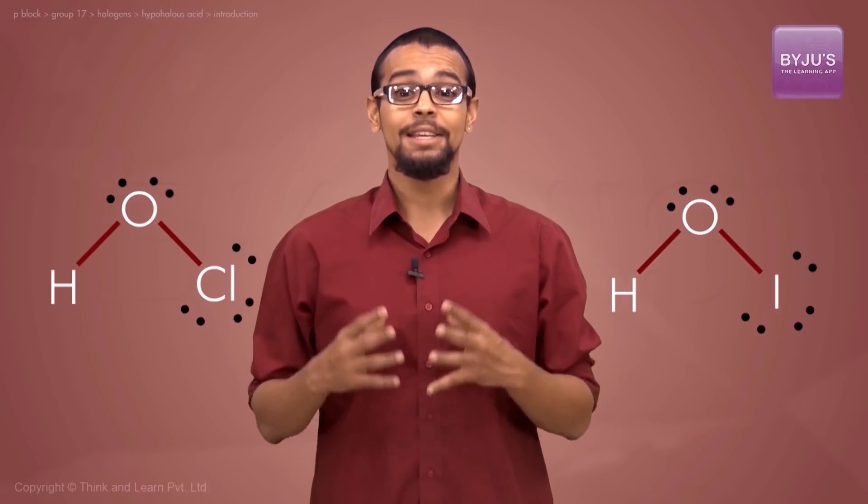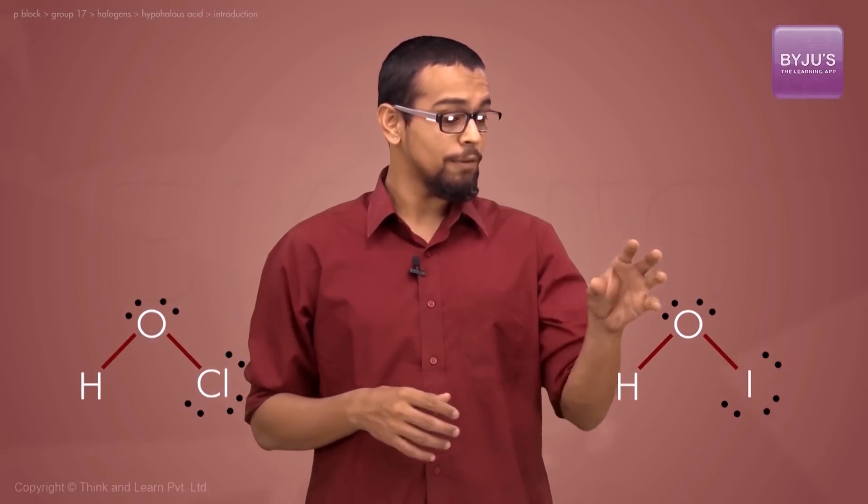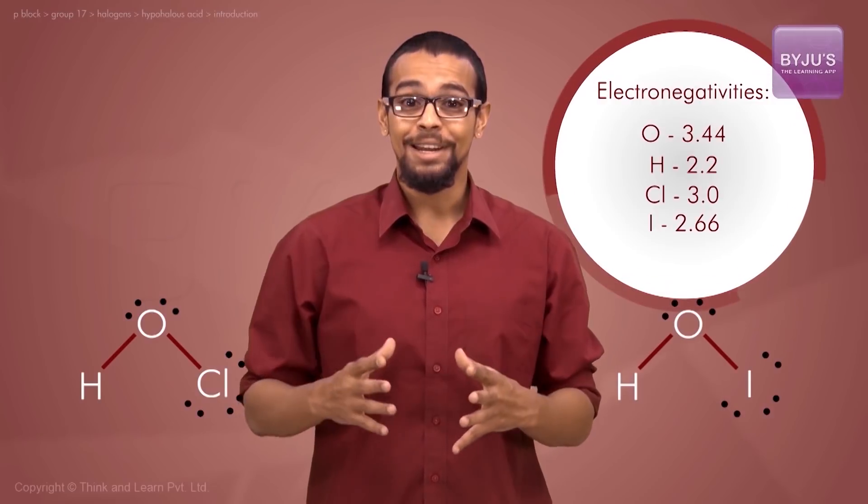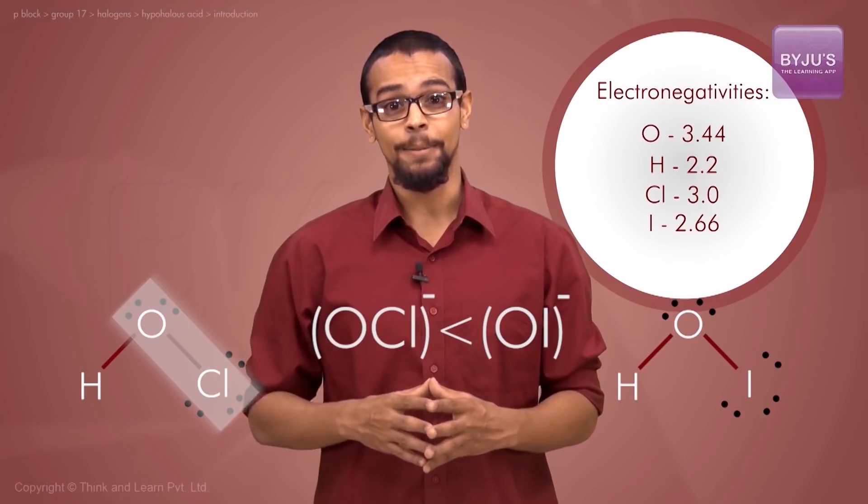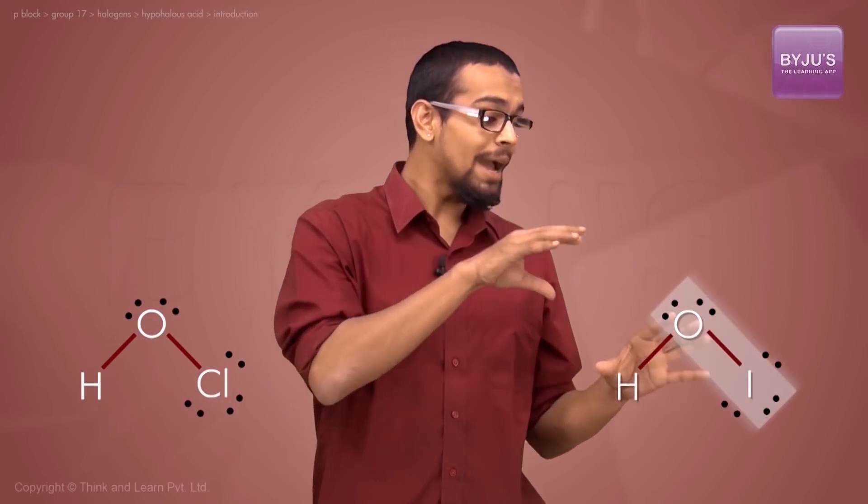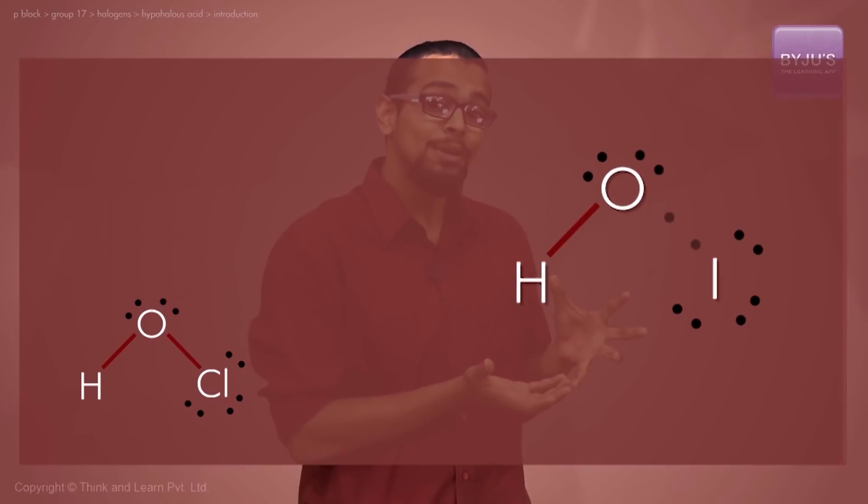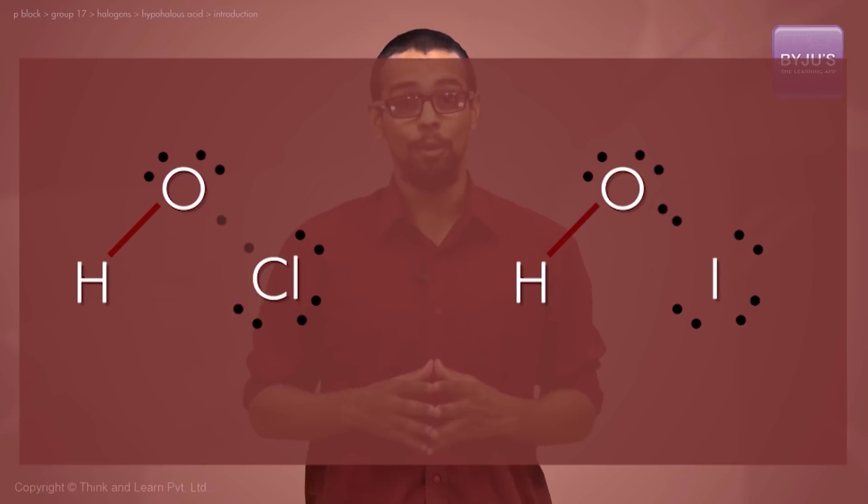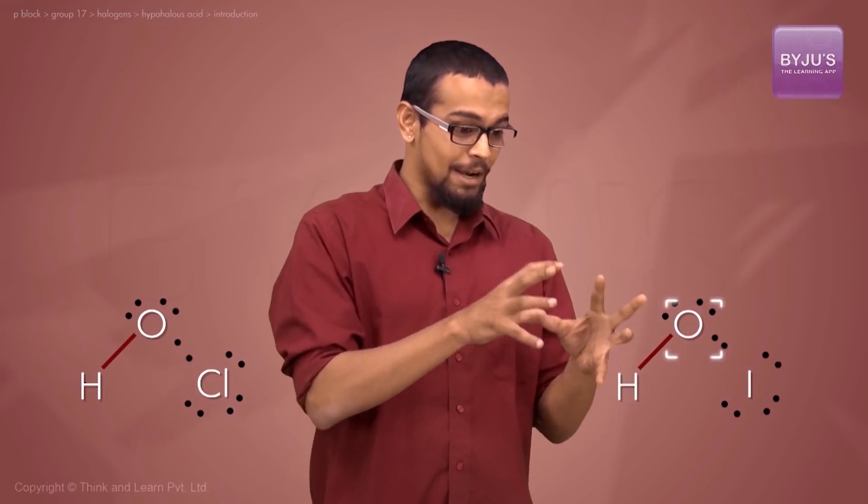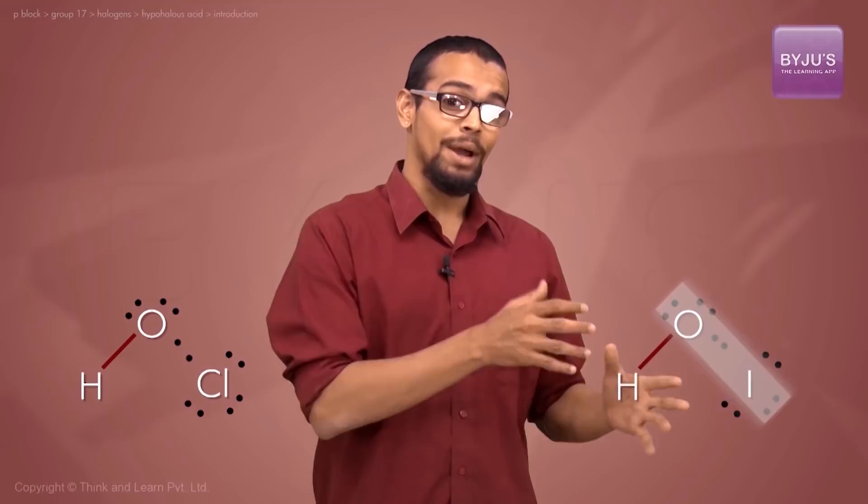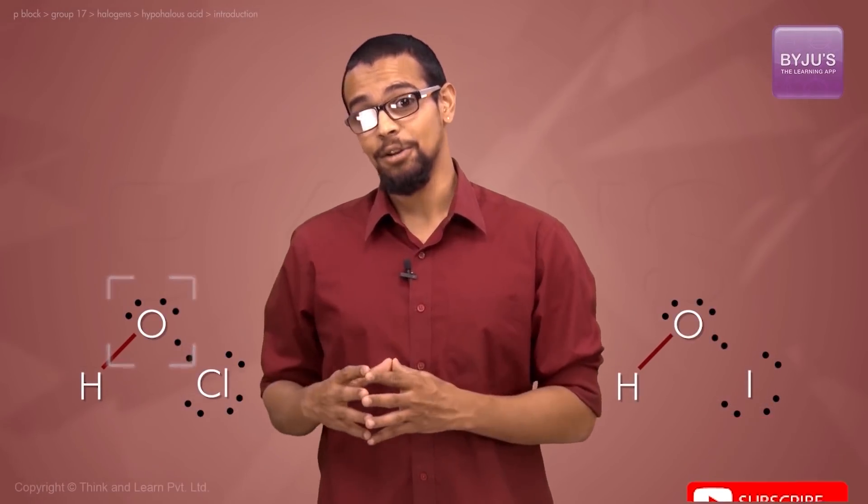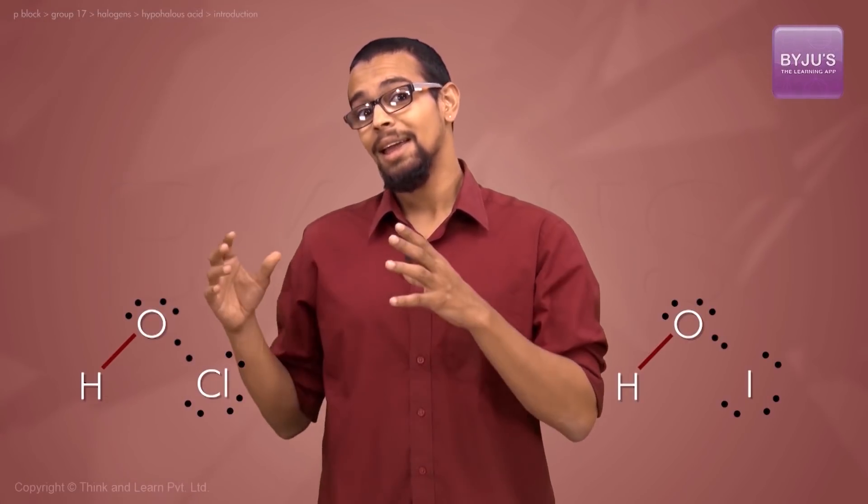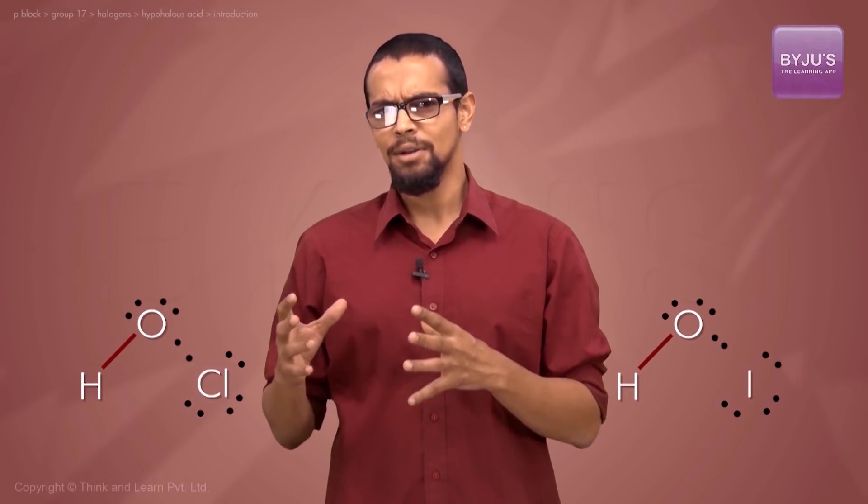The electronegativity difference in the OI bond is much greater than in the OCl bond. In the OI bond, oxygen pulls the shared pair of electrons much closer to itself. The density of electrons around oxygen from the OX bond is much greater in HOI than in HOCl.